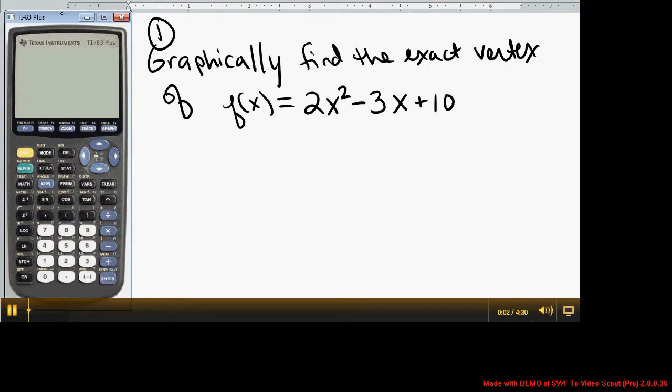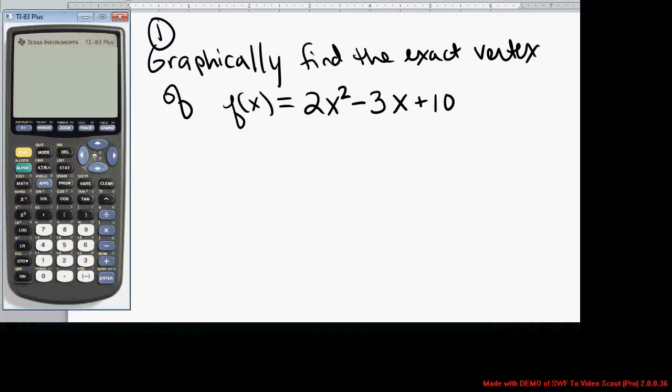In this video, we're going to figure out how to find the max and the min graphically using the graphing calculator. We're going to take the function f(x) = 2x² - 3x + 10 and find the vertex.